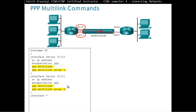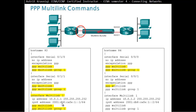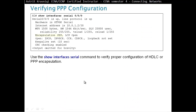Now we have created a virtual Multi Link Interface, and in that virtual interface we give an IP address — whatever IPv4 or IPv6 address — and we specify Multi Link Group 1. To verify the PPP configuration, use Show Interface Serial followed by the serial interface in question; it will show us that we have enabled PPP.